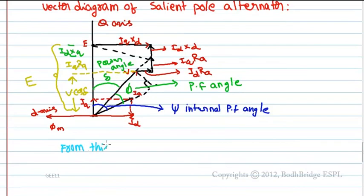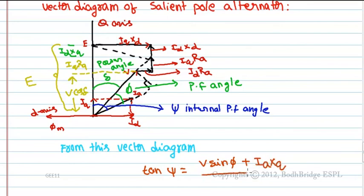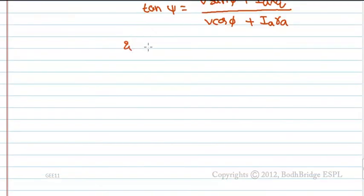tan psi equals V sin phi plus Ia Xq, divided by V cos phi plus Ia Ra. And psi equals delta plus phi.